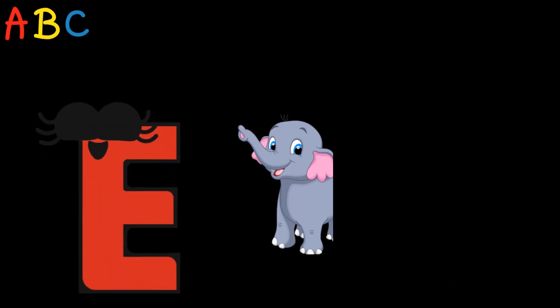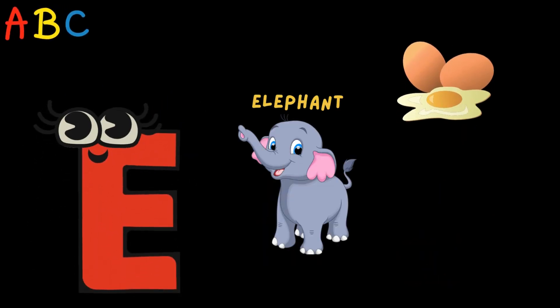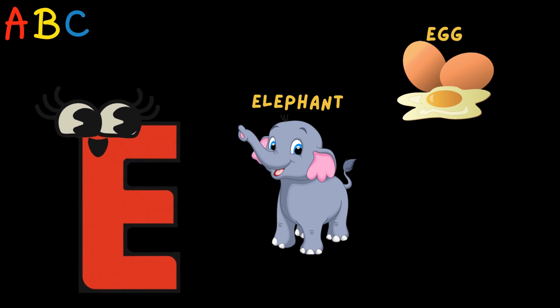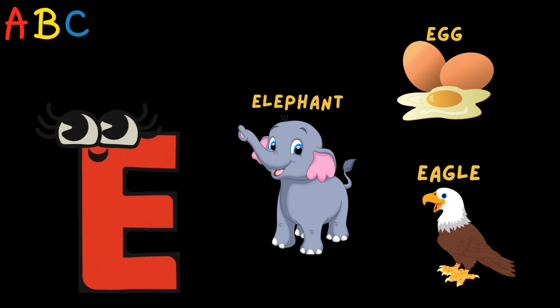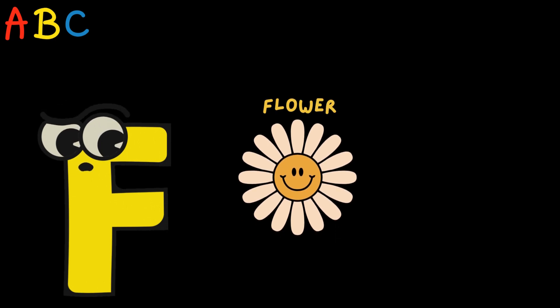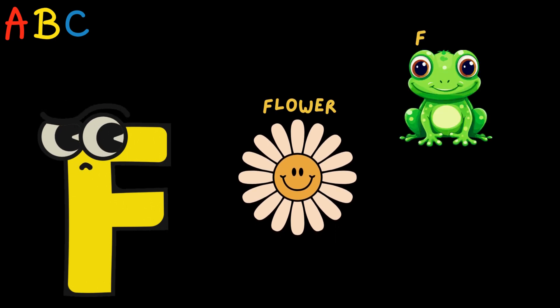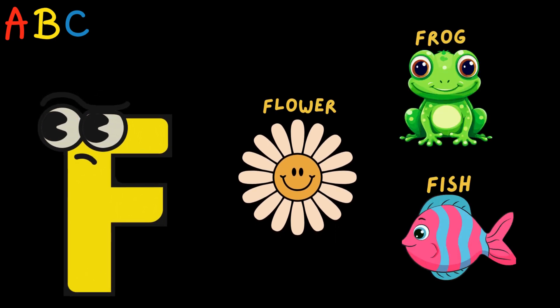E is for Elephant, Egg, Eagle. F is for Flower, Frog, Fish.